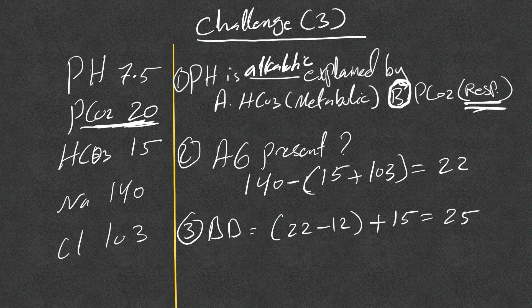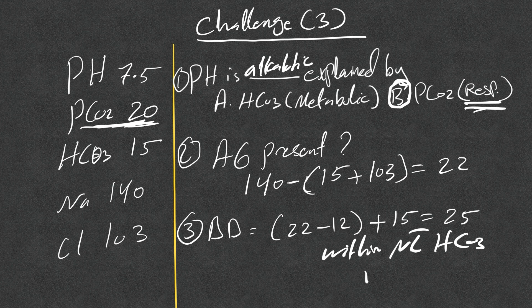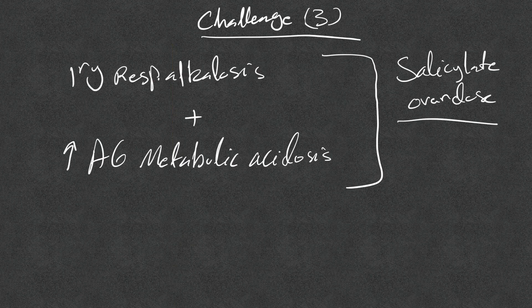Delta-delta: current anion gap 22 minus normal anion gap 12 equals 10, plus the serum bicarb 15, which gives 25. That value of 25 is within the normal bicarb range. So there is no metabolic alkalosis and no normal anion gap metabolic acidosis. We stop with two acid-base disorders: primary respiratory alkalosis and high anion gap metabolic acidosis.